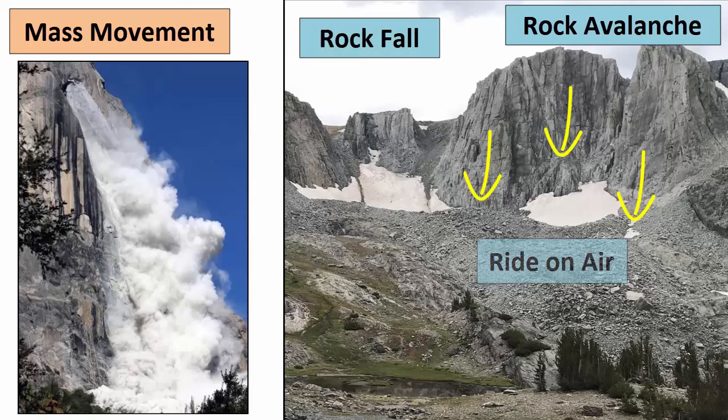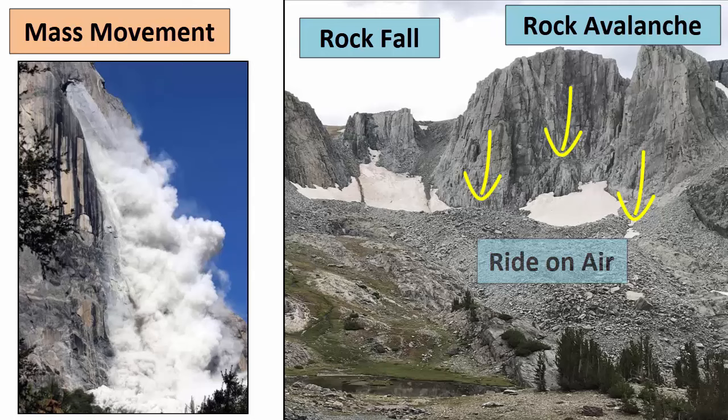Rock falls and rock avalanches pose a considerable threat to communities that live in the mountains. When a layer of rocks slides downhill along a planar surface, usually a rock bedding contact, fault or foliation plane, it's called a slide.